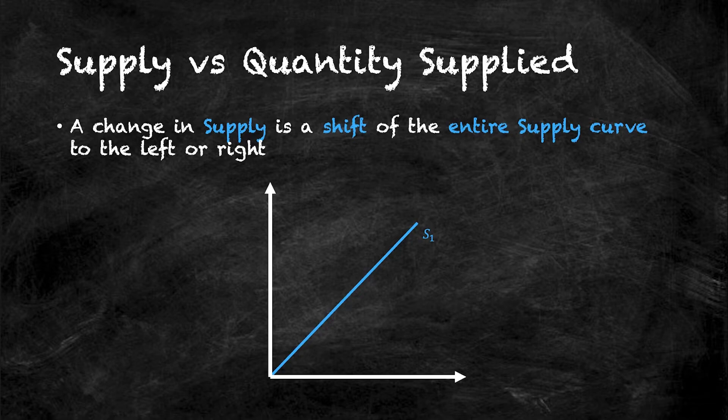A change in supply is a shift of the entire supply curve to the left or right. So here I have my original supply curve denoted as S1.